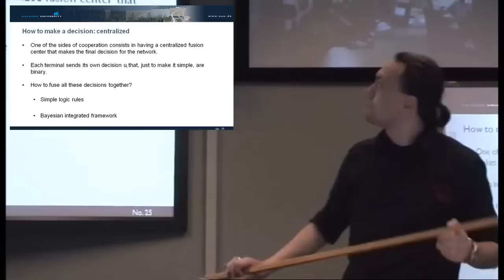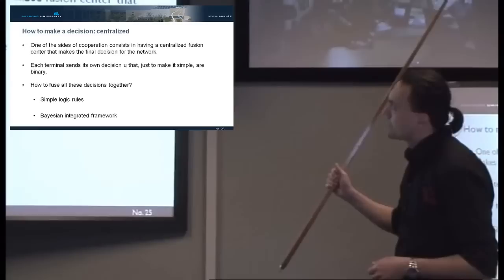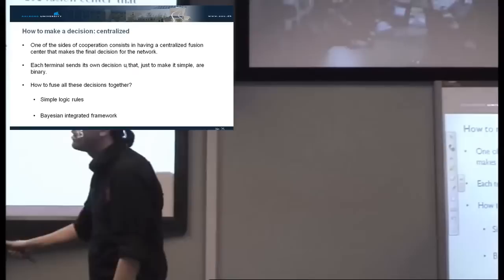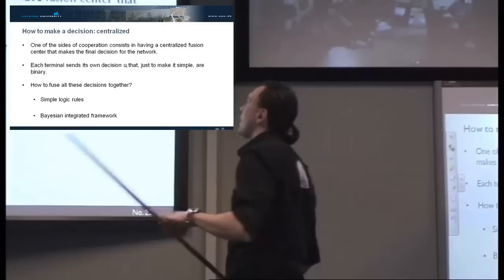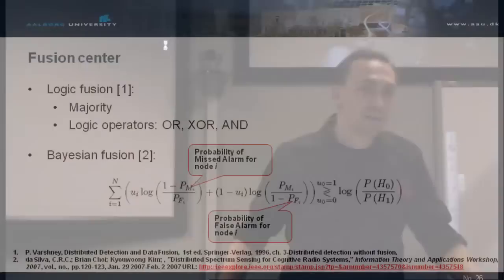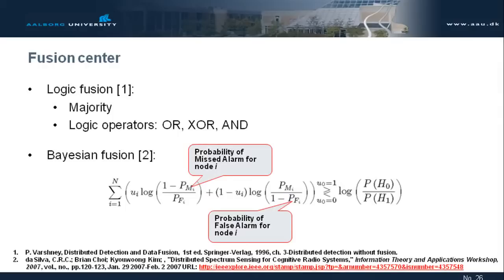So centralized decision, every one of us makes a decision, for example. And then, sends it out. How do I fuse all these decisions? The simplest way are simple logic rules. Or, I can have something more complex, like this Bayesian integrated framework, I will give you the reference later on. But, again, in the logic fusion, the simple rules are the majority. How many of you have decided that the channel is occupied? None. So the channel is free. Simple case. Or, five tells me that it's occupied, but ten tells me that it's not occupied.